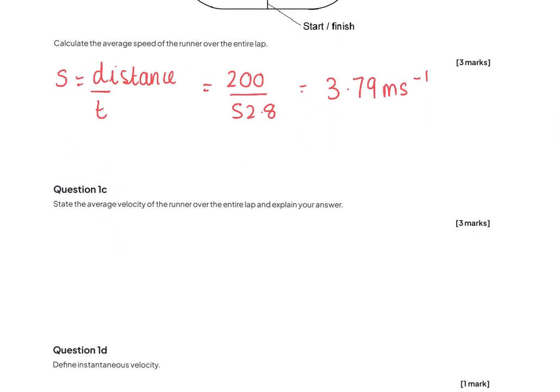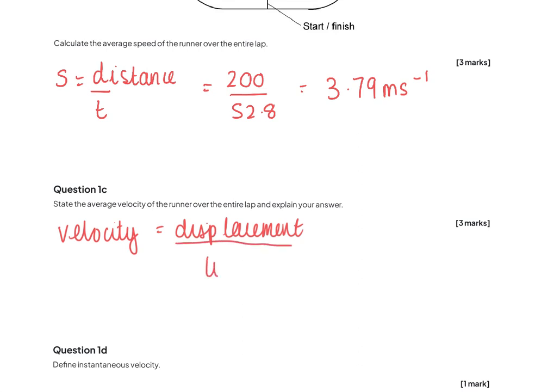Part c: state the average velocity. The equation for velocity is displacement over time, not distance over time. Because it is a circular track, he starts and ends at the same place, so his displacement is going to be 0. Because it's a 3-mark question, we should also state in words: because it's a circular track, he starts and ends in exactly the same position, so his displacement is 0.